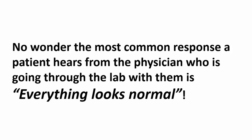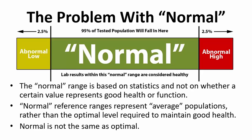One of the most common responses a patient hears from their physician is 'everything looks normal.' But there's a big problem with normal. Lab data are tricky — their meaning is derived from comparing to normal values. So the very first question we should ask is: how are normal values derived? The majority of conventional normal reference ranges are based on the distribution of a bell curve, which says that 95% of the population are normal, 2.5% are above normal, and 2.5% are below normal. The normal range is based on statistics, not on whether a certain value represents good health or function.